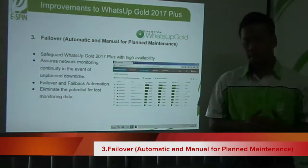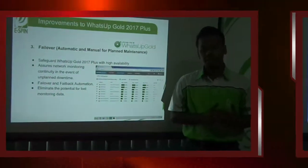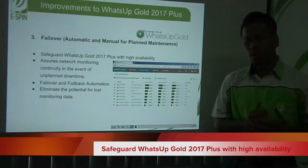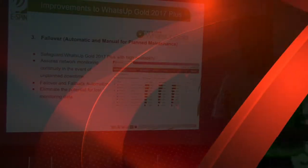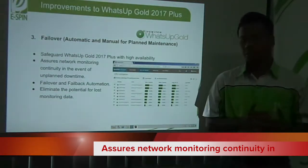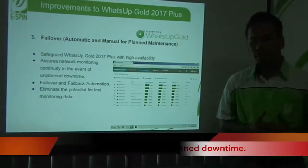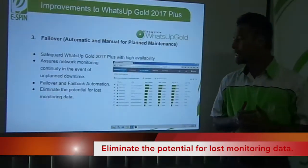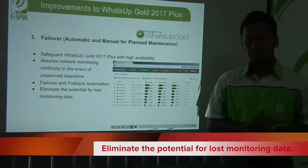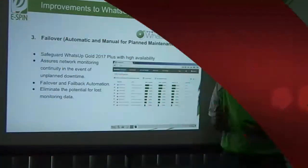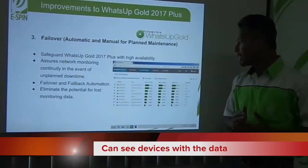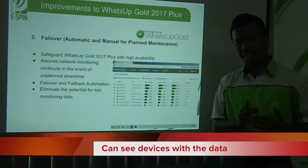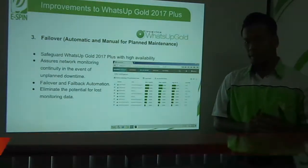The third improvement to WhatsApp Gold 2017 Plus is failover — both automated and manual for planned maintenance. It safeguards WhatsApp Gold 2017 Plus with high availability, ensuring network monitoring continuity in the event of unplanned downtime, failover or failback automation, and also eliminates the potential for lost monitoring data. Here in this network section, you can see the device with data, which is easier than before.